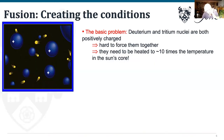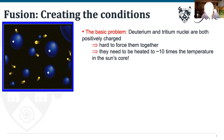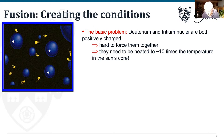Why is it hard? The deuterium and tritium nuclei are both positively charged and repel each other via Coulomb repulsion. One way to overcome this is to heat them to really high temperatures — about 100 million degrees centigrade — so they move fast enough to fuse. That's about ten times the temperature at the center of the sun.